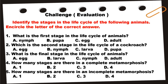Number five: How many stages are there in an incomplete metamorphosis? A. One. B. Two. C. Three. D. Four.